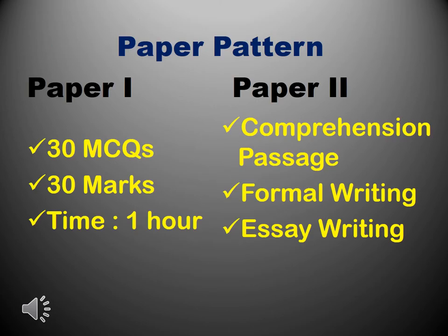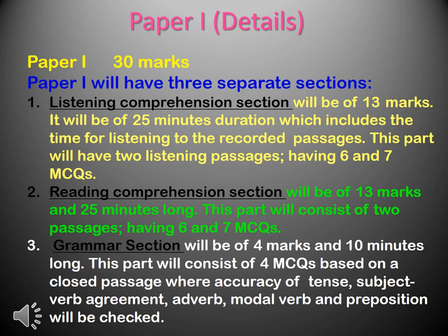If we skim through the paper pattern, we can see that in Paper 1, students are expected to attempt 30 multiple choice questions in an hour's time, and for this they will be awarded 30 marks. While in Paper 2, there will be a comprehension passage, formal writing, and essay writing. Paper 1 has three separate sections. The first section is listening comprehension, which carries 13 marks and has a duration of 25 minutes, including time for listening to the recorded passages. This part will have two listening passages having 6 and 7 MCQs.